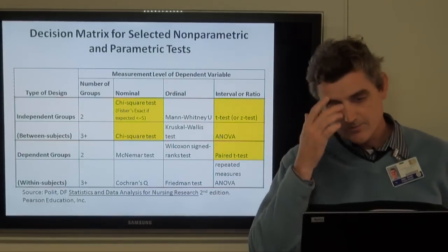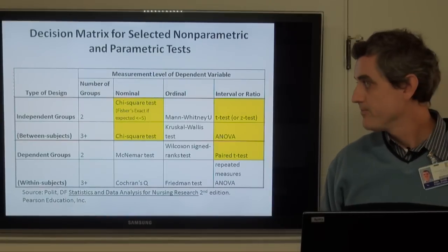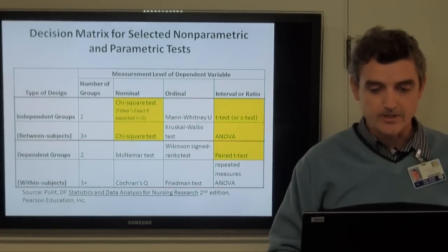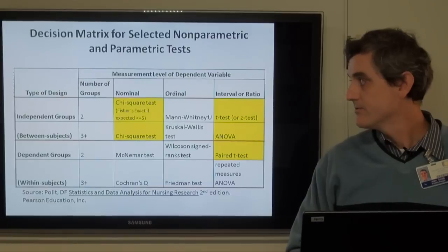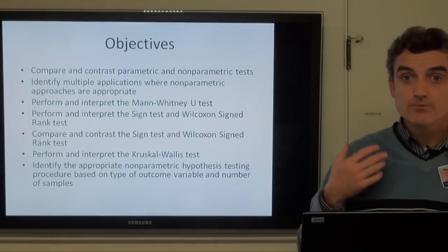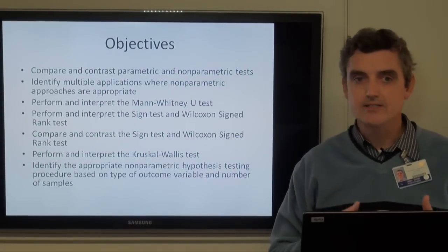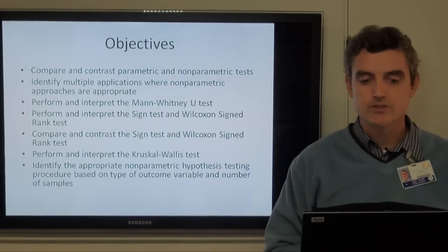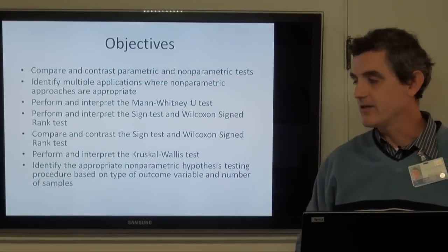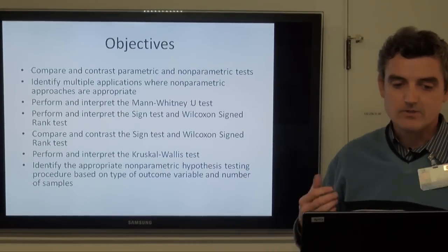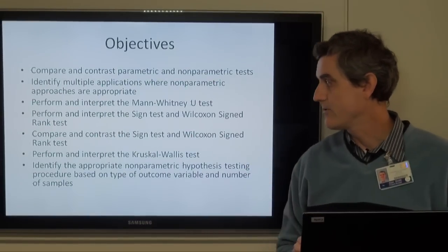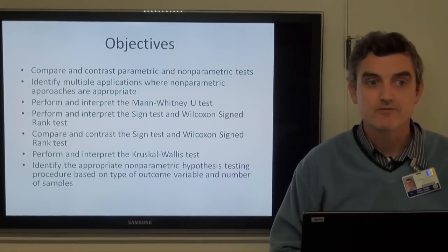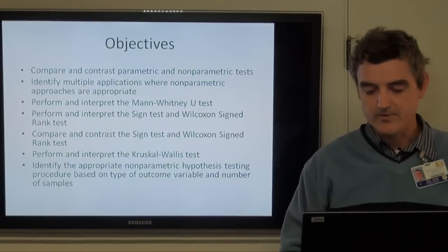But there are a number of other situations where you have a different type of outcome variable with these confusing-sounding names that don't really describe what they do. That's what we're going to talk about today — some of the more commonly used non-parametric tests: the Mann-Whitney U, the sign test, the Wilcoxon signed rank test, and Kruskal-Wallis, and we'll figure out based on the type of data and number of groups which is the more appropriate non-parametric test to use.